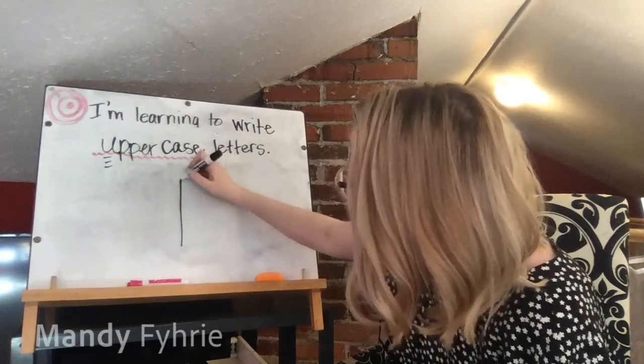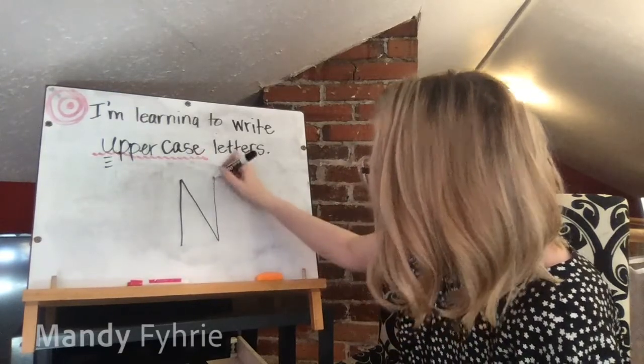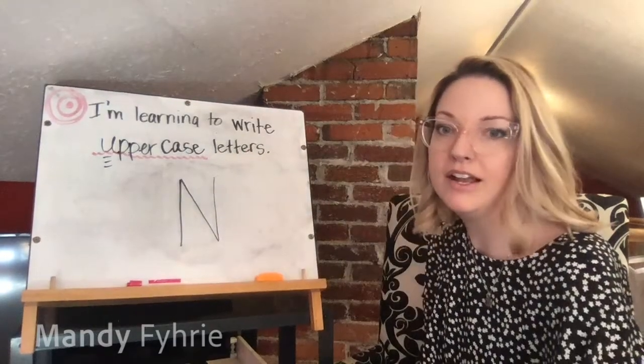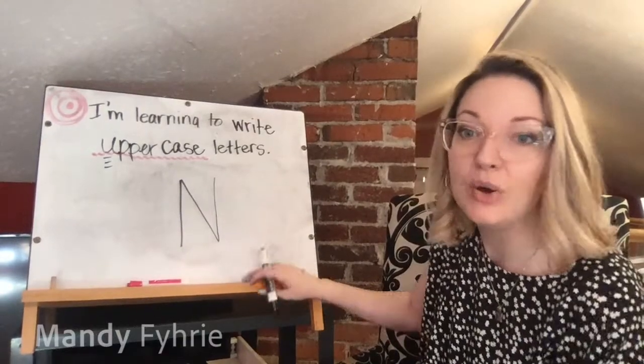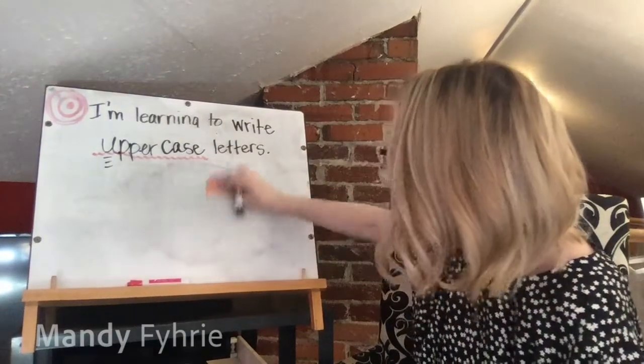Capital N is similar to M but with just one peak instead of two. Big line down, hop to the top, slide down, then straight back up. You only pick up your marker one time, just like with M. Big line down, hop to the top, slide down, straight line up.